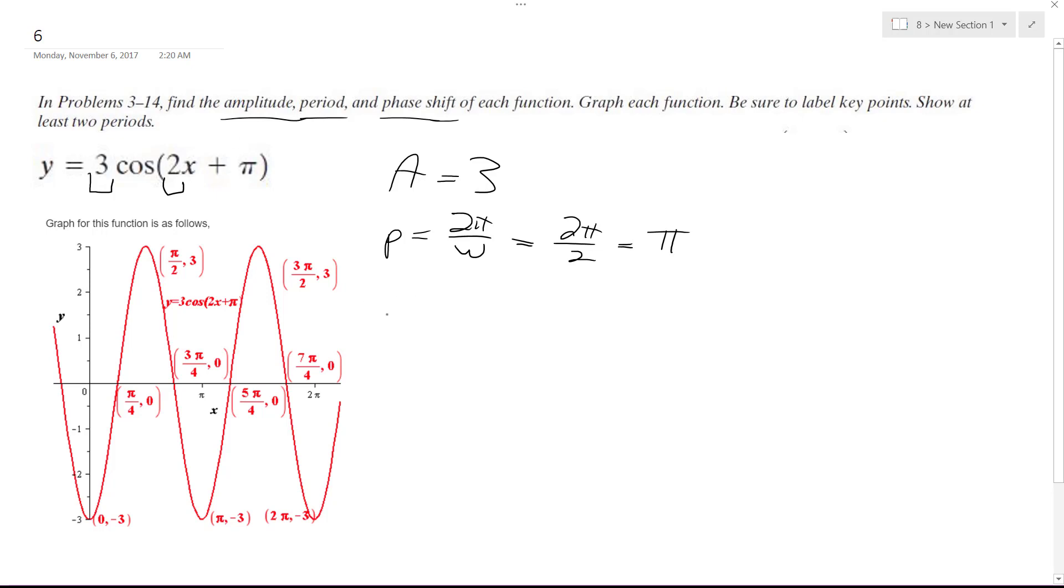And then phase shift is going to be equal to theta divided by omega, so in this case pi divided by 2.